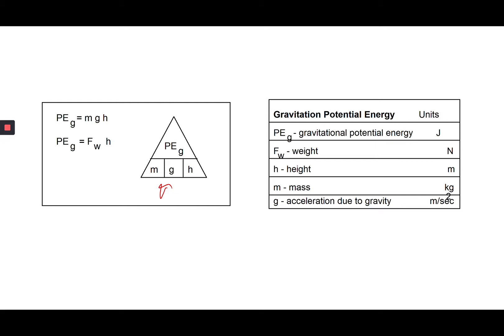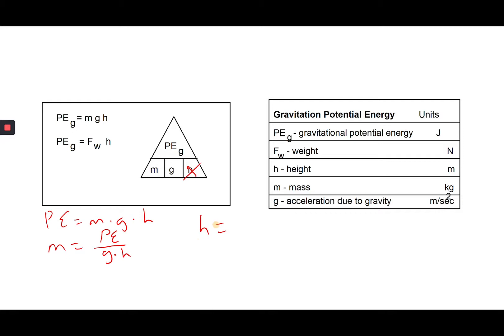If I want to find potential energy, it's sitting on top and everything across the bottom is multiplied: potential energy equals mass times gravity times height. If I want to find mass, I cross it out and I'm left with potential energy on top and gravity times height on the bottom. To find height: height equals potential energy over mass times gravity. To find gravity on a different planet: G equals potential energy over mass times height.